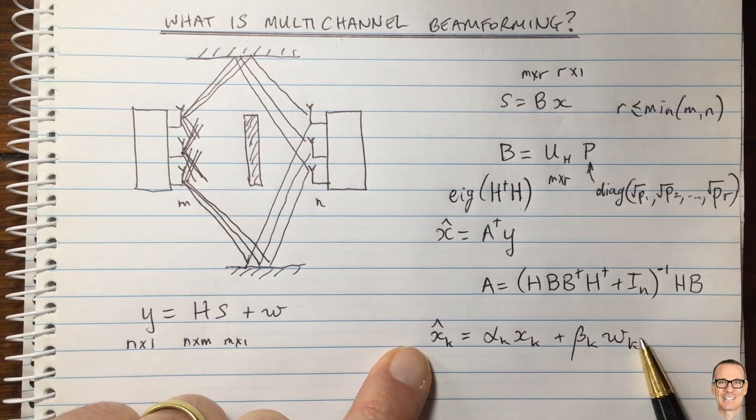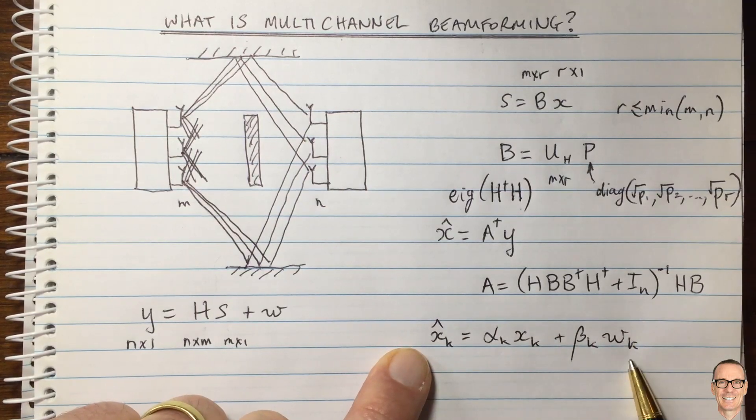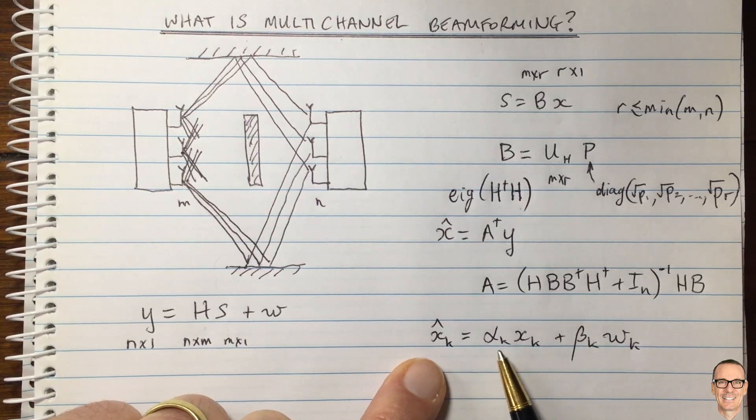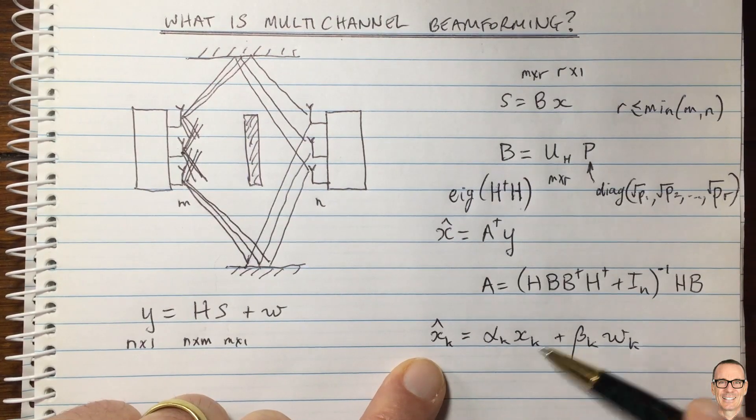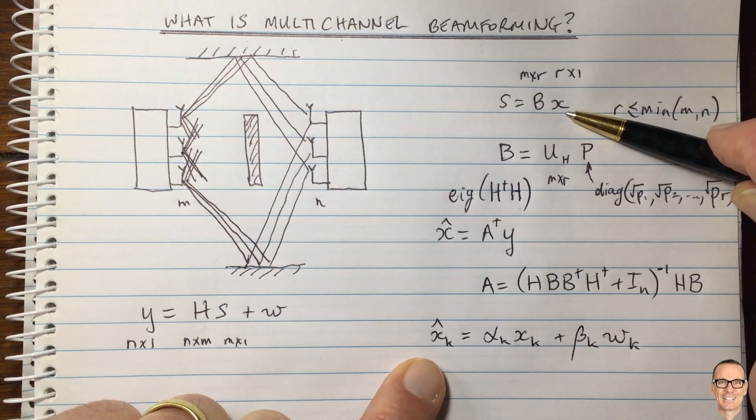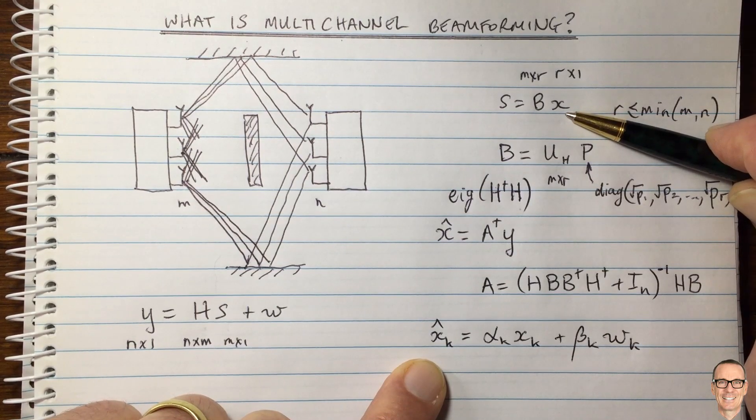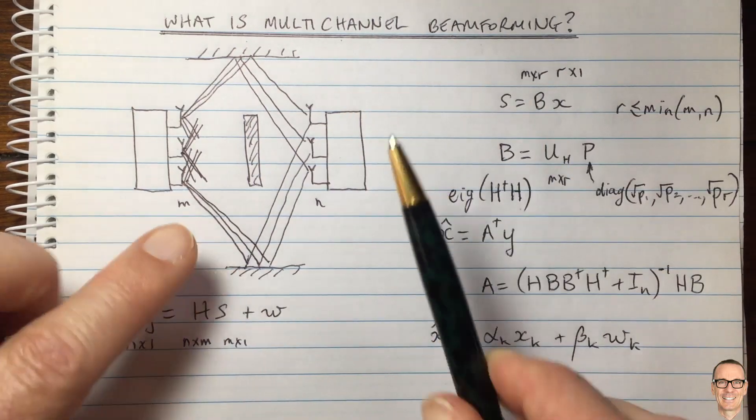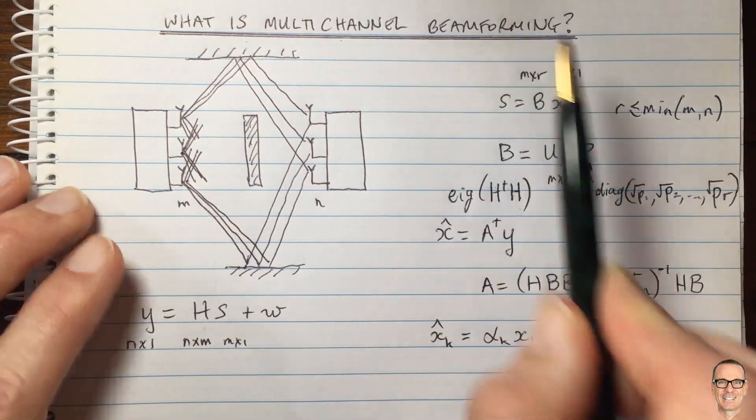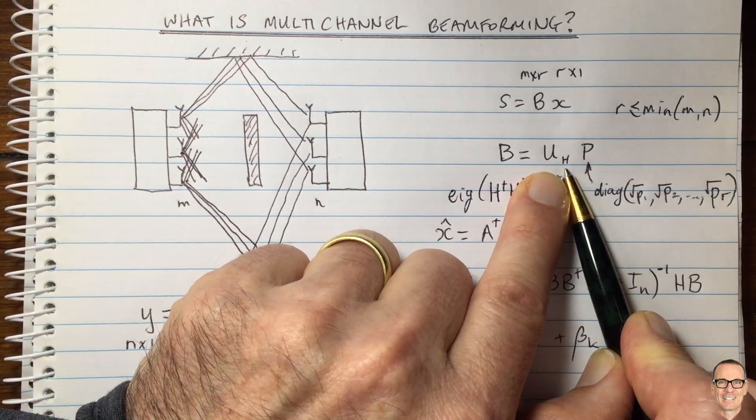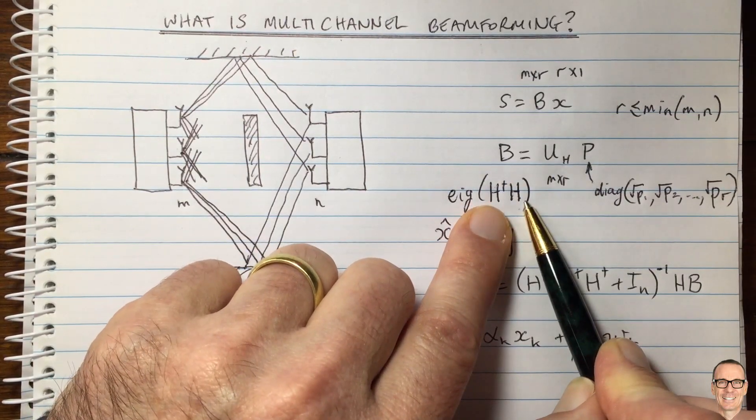And so we now have R parallel channels, each of which is simply the input coming out with a scaling plus noise, not interfered with by the other data stream. So all the data streams are going through independent of each other in parallel. And each one is going on its own beam, and the beams are defined by the eigenvectors of this matrix here.